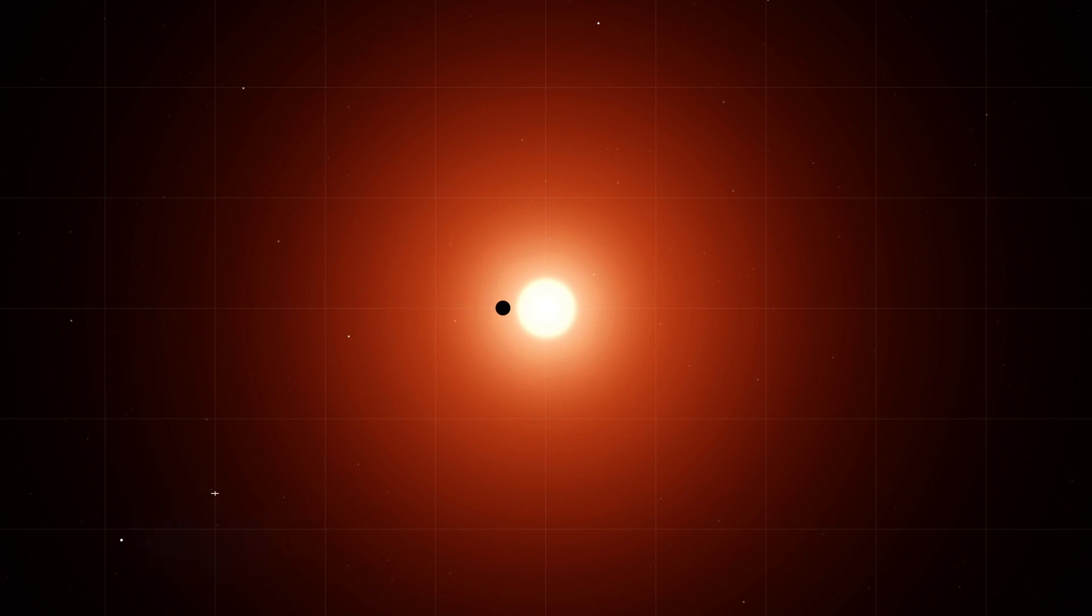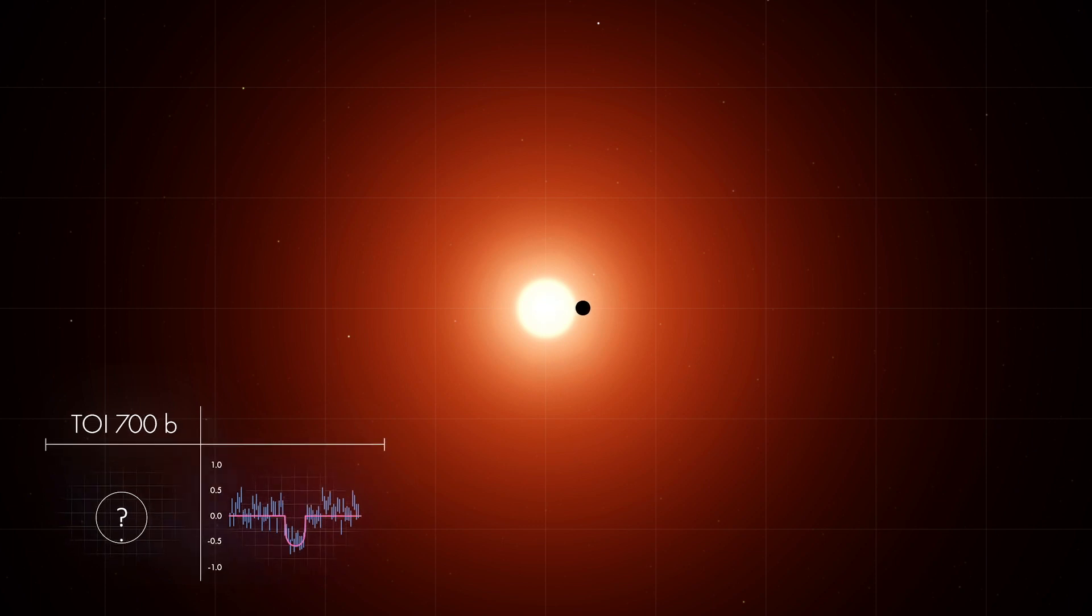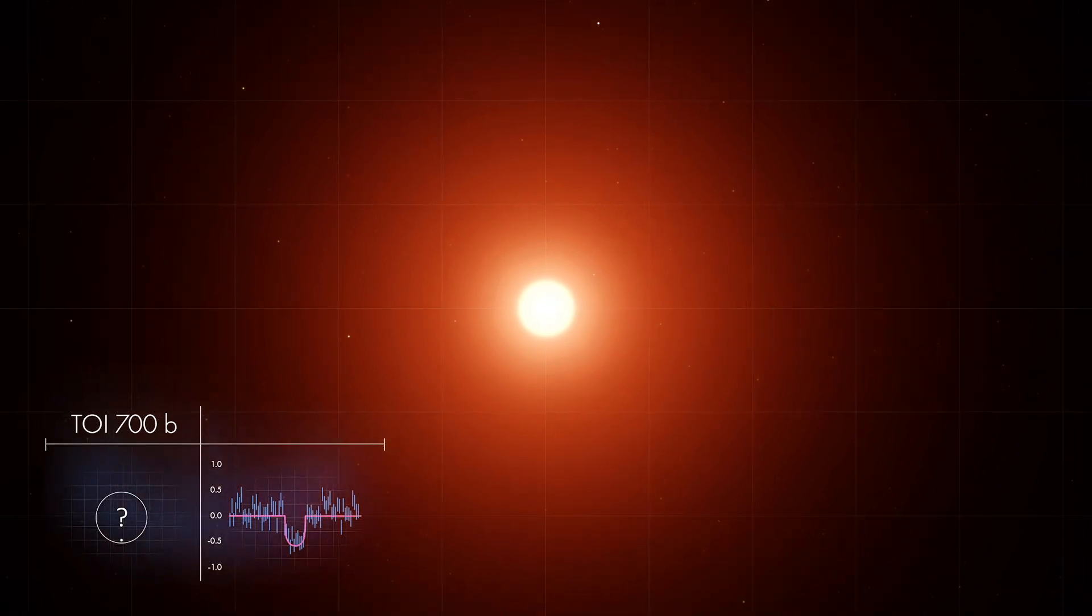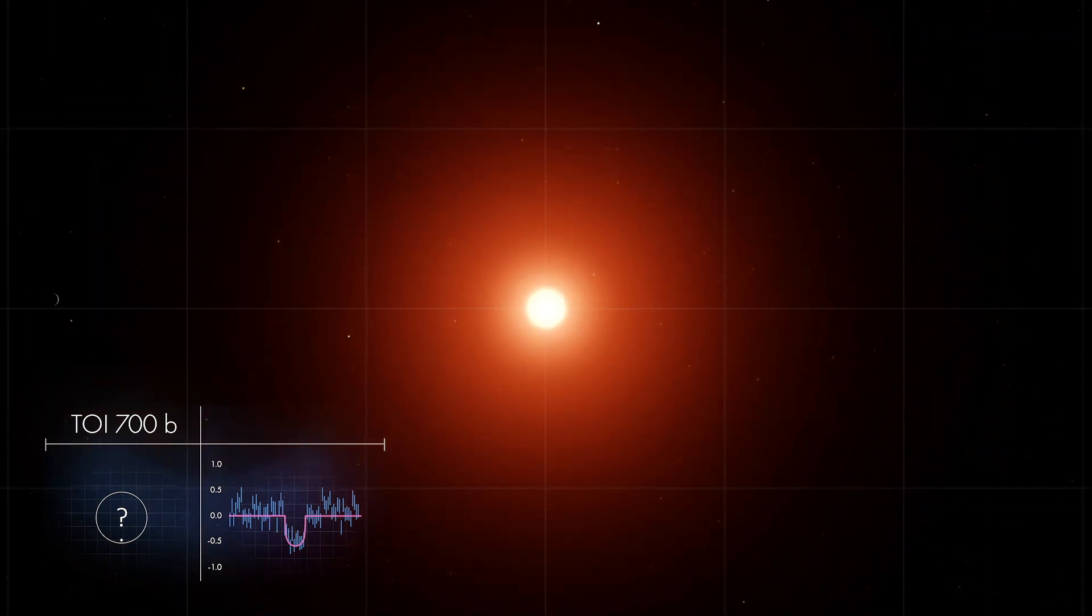One set of transits announced the presence of a planet close to the star, called TOI-700b. Another set revealed a second planet, named TOI-700c, a little farther out.